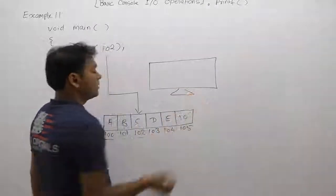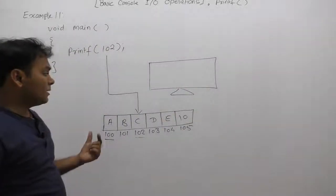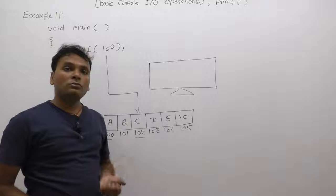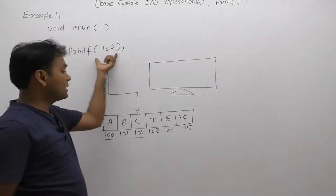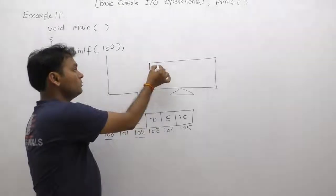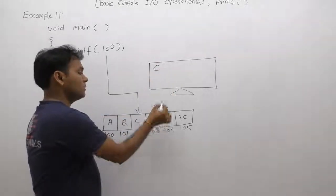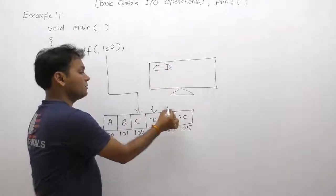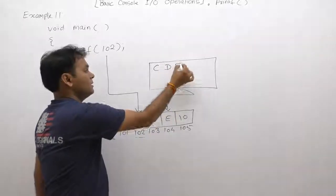As we discussed regarding strings, we require only two pieces of information: the base address of the string and the end-of-character null. Here we are reading the string from location 102: C, next one D, next one E, next one null. Therefore, it stops printing here.